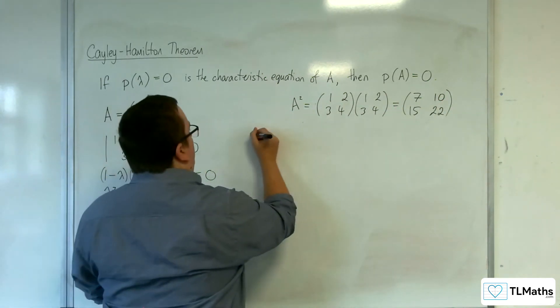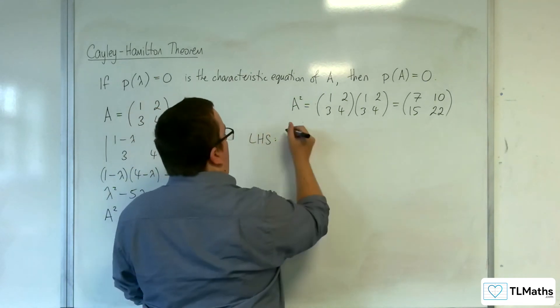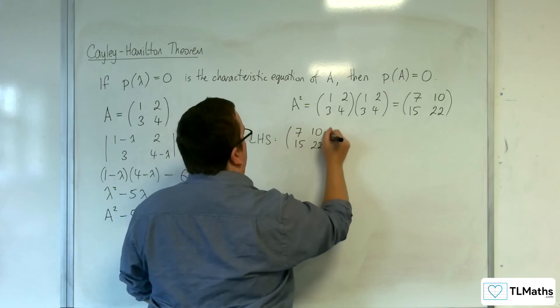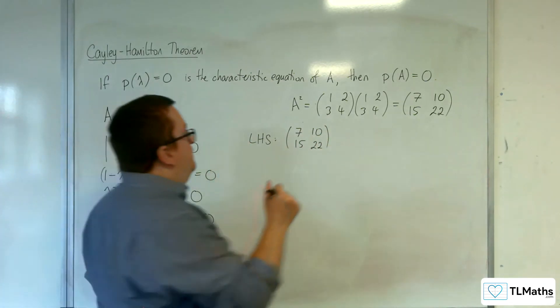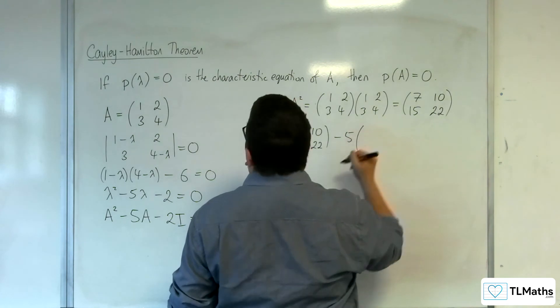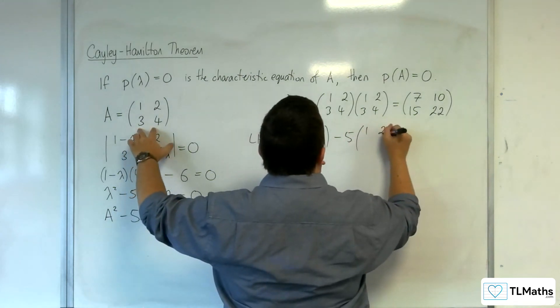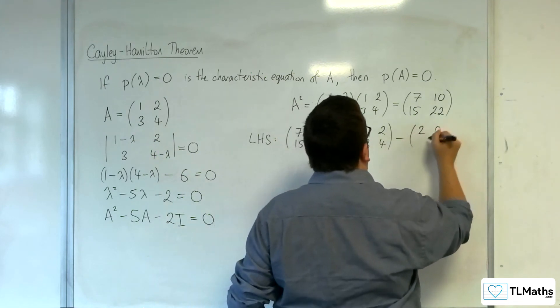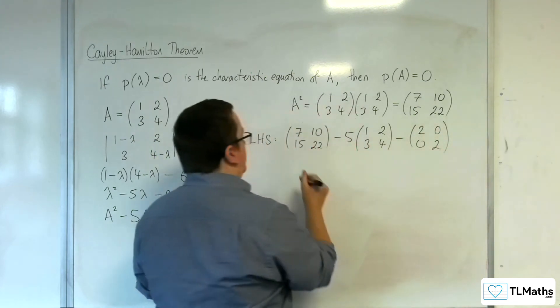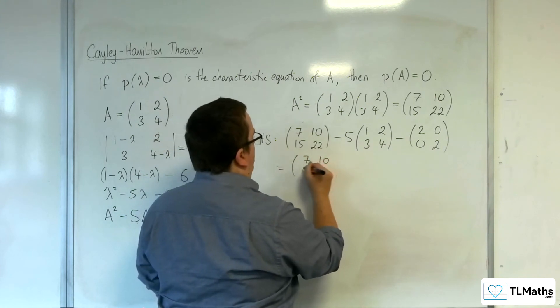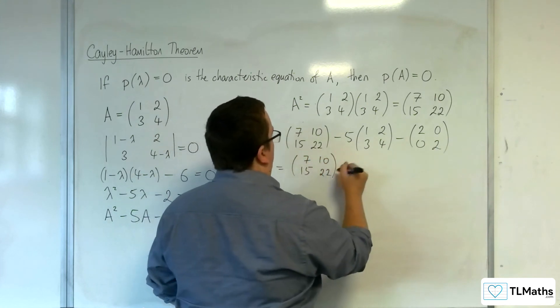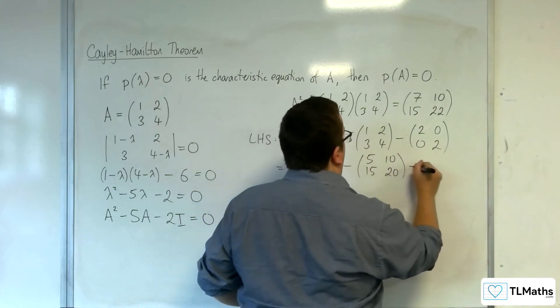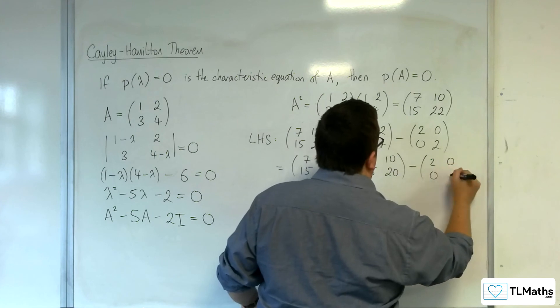So the left-hand side is A squared, so 7, 10, 15, 22. Take away 5 lots of A. So take away 5 lots of 1, 2, 3, 4. Take away 2 lots of the identity, so take away 2, 0, 0, 2. So we've got 7, 10, 15, 22. Take away 5, 10, 15, 20. Take away 2, 0, 0, 2.